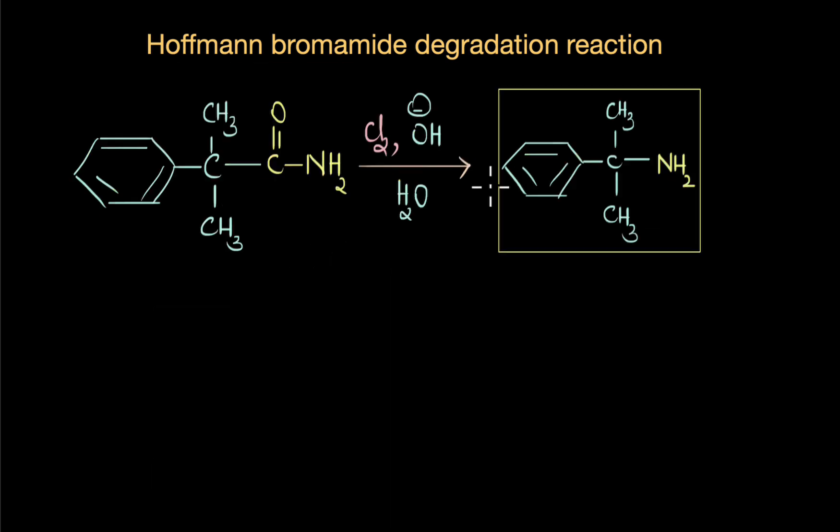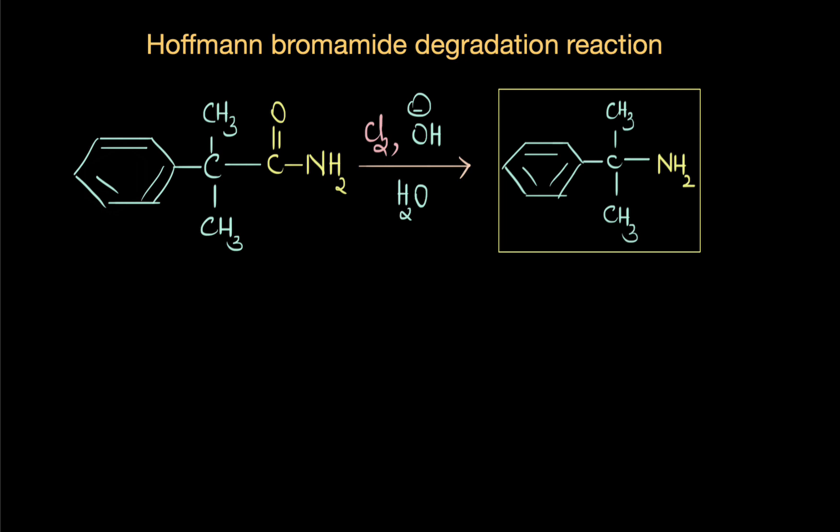These kinds of primary amines can be easily synthesized using Hoffmann reaction. For example, look at this reaction. Here we have an amide which when it undergoes Hoffmann bromamide degradation reaction gives us a primary amine. You can see that this amine has a tertiary alkyl group attached to it. Similarly, aniline and substituted aniline can be easily prepared by the Hoffmann degradation reaction.